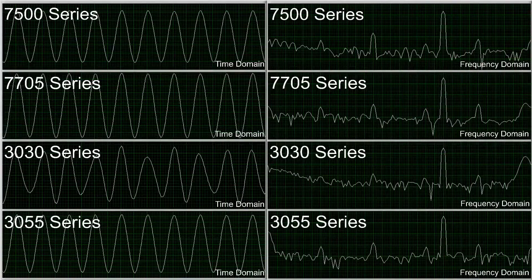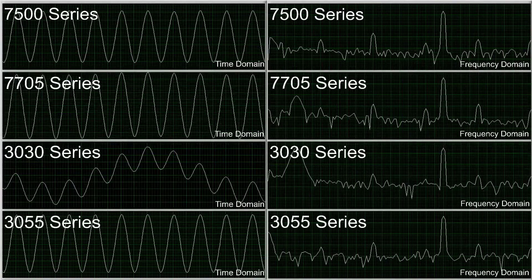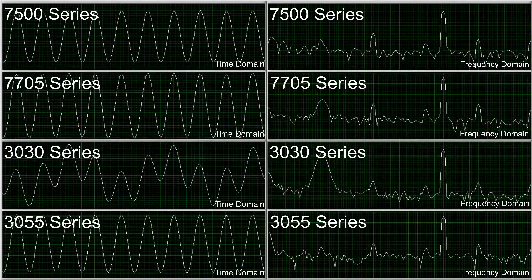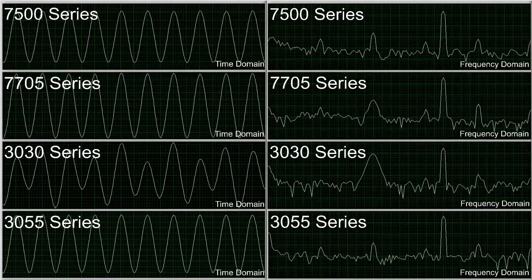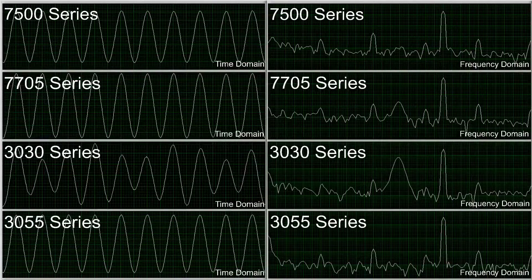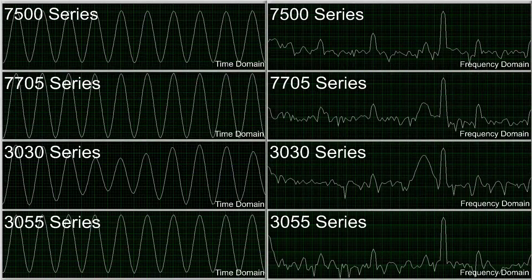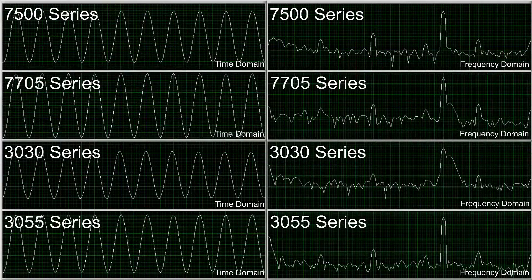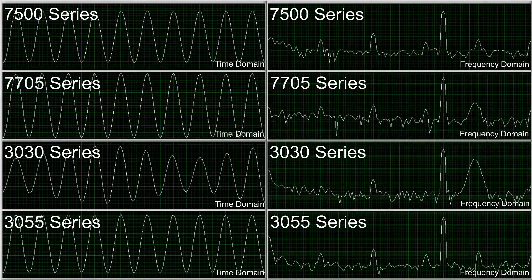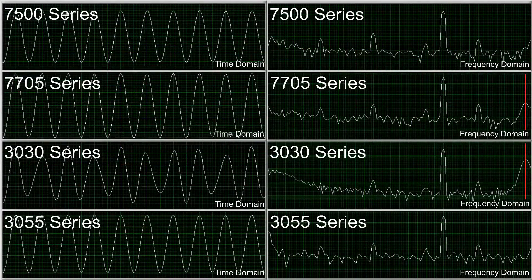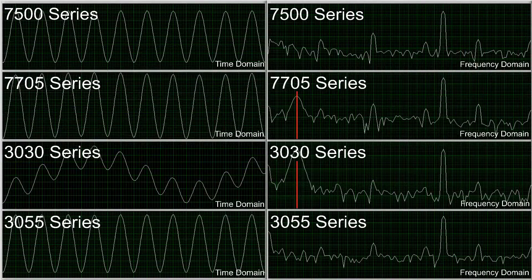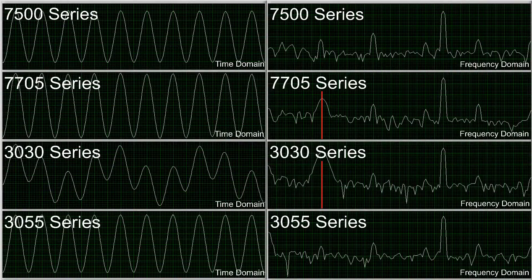When we review the data in the frequency domain, it becomes more apparent that the sensors are affected by the ground loop. For both units, we can observe a distinct peak of the ground loop as it sweeps from 10 Hz to 300 Hz in the frequency domain.